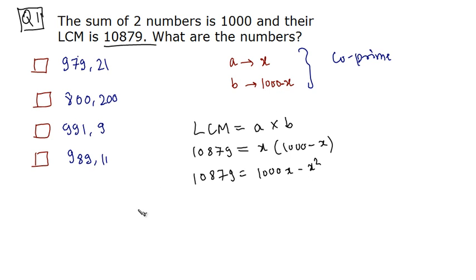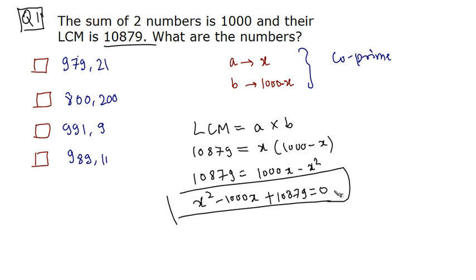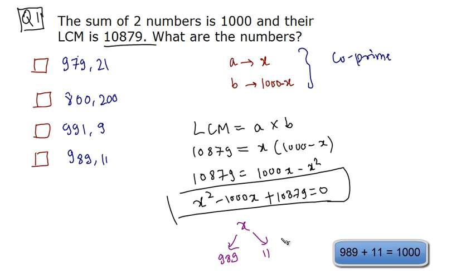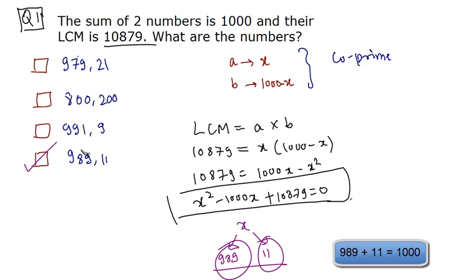Let's bring all the terms to the left hand side. So we can write X squared minus 1000X plus 10879 equals 0. This is a quadratic equation. If you solve it, you get the two roots of X as 989 and 11. If you don't know how to solve a quadratic equation, search online or watch some of my previous videos. So the roots are 989 and 11, and our answer is option D.